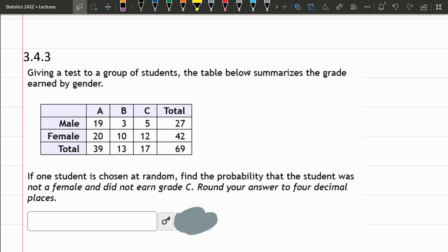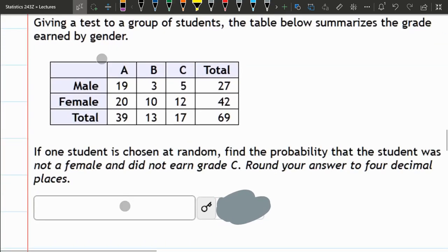Not a female and did not earn a grade C. What I'm going to do in red is circle everything that is not favorable. Here's all the C's, and I'm skipping the totals here. These are not favorable and not female. So it really narrows it down. Originally there was six outcomes, and we've gotten rid of four of the six.